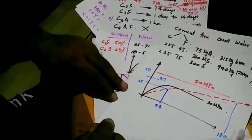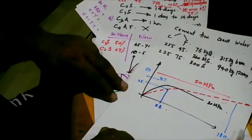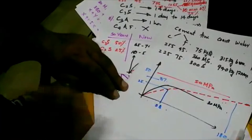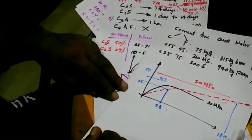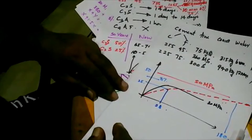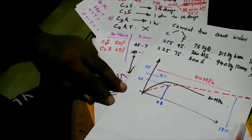Because we are precasting, we can cure for more than two weeks — something very difficult on a normal site where curing stops after 3–4 days. We keep everything moist under polythene sheets, creating a superb hydration environment and ensuring very high strength.